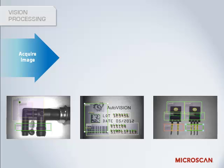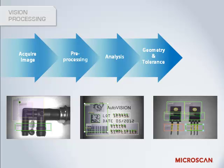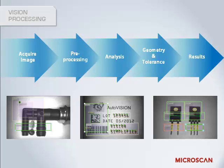Vision processing consists of several steps, or algorithms, performed by the software. First, the image is acquired from the sensor. In some cases, pre-processing may take place to optimize the image and ensure that all the necessary features stand out. The software then finds the features that it is supposed to look for, runs measurements, and compares these to the specification. Finally, the results of these measurements will be communicated as pass or fail.